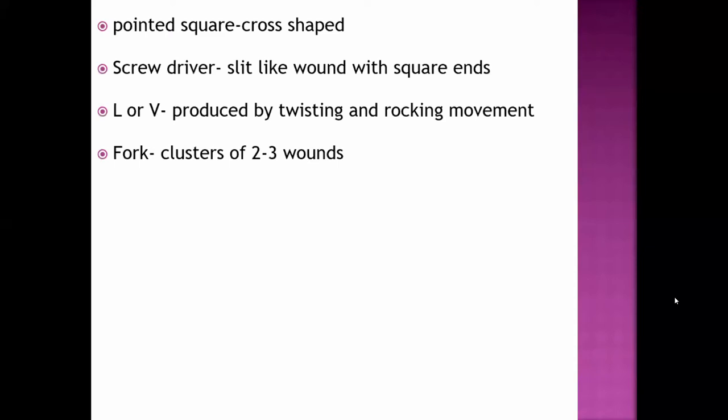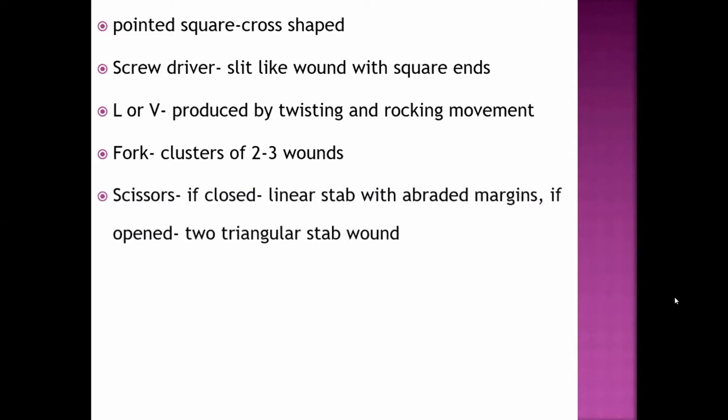If fork is used, then cluster of two to three wounds can be seen. If scissor is used, it can be in two manners. If it's in closed form, then you can see linear stab with abrasion margin. If it's open, then you can see two triangular stab wounds because one end is blunt and another edge is sharp.